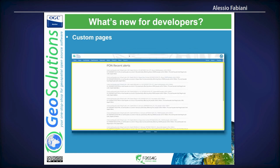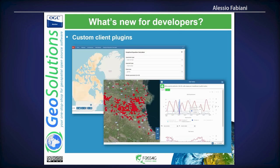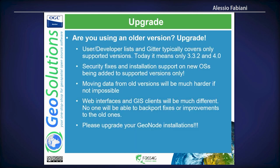Branding and theming, custom pages, and even custom client plugins — you can create custom MapStore plugins without having to bundle them into the Geonode client. You can keep them in your own projects, even a private repo, and have the MapStore client pull those plugins and integrate them. Lots of things in Geonode 4. If you're using an older version, please upgrade soon — we are pushing forward to move past 3.3.